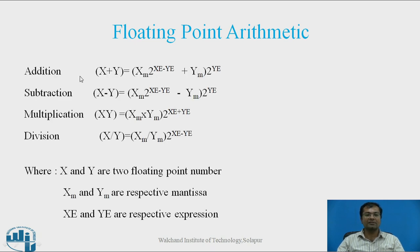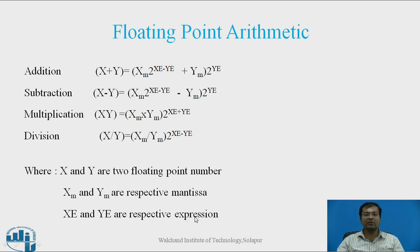Let us see the formulas. For addition, if you take two numbers x and y, then x plus y is equal to (xm into 2 raised to (xc minus y) plus ym) into 2 raised to y, where xm indicates mantissa and xc indicates the respective exponent. Similarly for subtraction, x minus y is equal to (xm into 2 raised to (xc minus y) minus ym) into 2 raised to y.